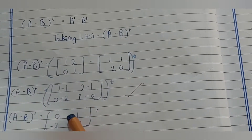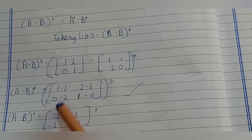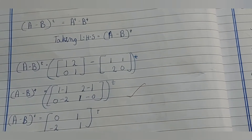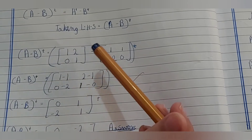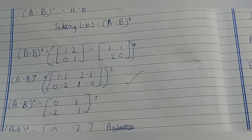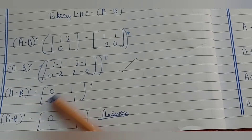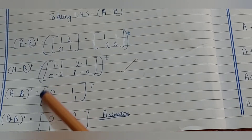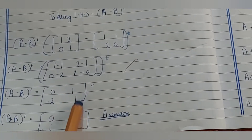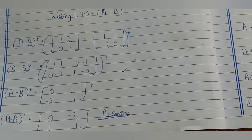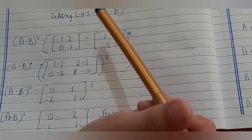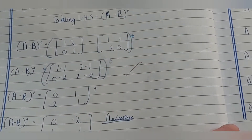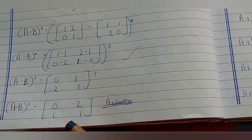Computing A − B: 1−1=0, 2−1=1, 0−2=−2, 1−0=1, so A−B = [0,1;−2,1]. Now we take the transpose of [0,1;−2,1]: rows become columns, so the left-hand side answer is [0,−2;1,1].